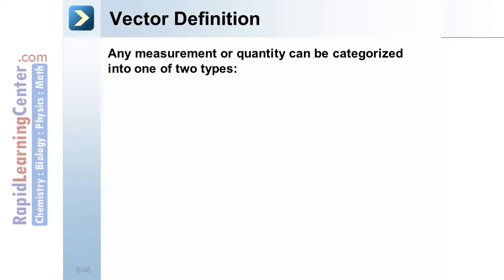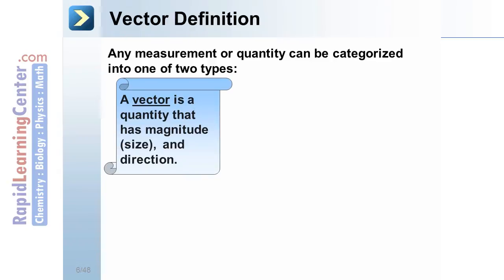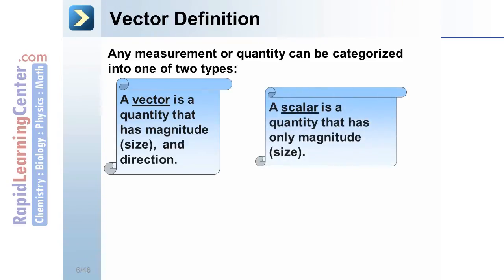Vector definition. Any measurement or quantity can be categorized into one of two types. A vector is a quantity that has magnitude and direction. A scalar is a quantity that has only magnitude.